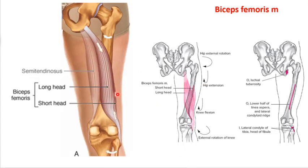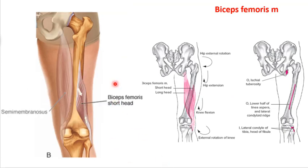Moving to the posterior aspect, the bulk of muscles here are the hamstring group — three muscles: biceps femoris, semitendinosus, and semimembranosis. The biceps femoris has two divisions: the long head and the short head. The long head attaches at the ischial tuberosity with the rest of the hamstring group, while the short head does not cross the hip — it's monoarticular, only crosses at the knee, and does only knee flexion. The other three hamstrings do both knee flexion and hip extension.